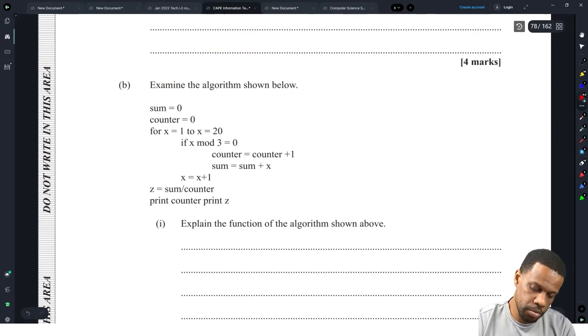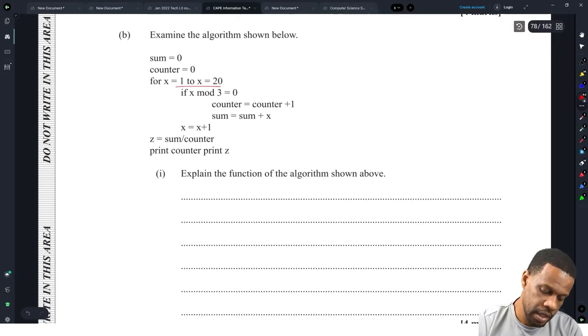Examine the algorithm shown below. Sum equals zero, counter equals zero. For x equals 1 to x equals 20. If x mod 3 equals zero, counter equals counter plus 1, sum equals sum plus x, x equals x plus 1, z equals sum divided by counter. So we find the sum of all the multiples of three between one and twenty, then basically find the average of all the multiples of three.